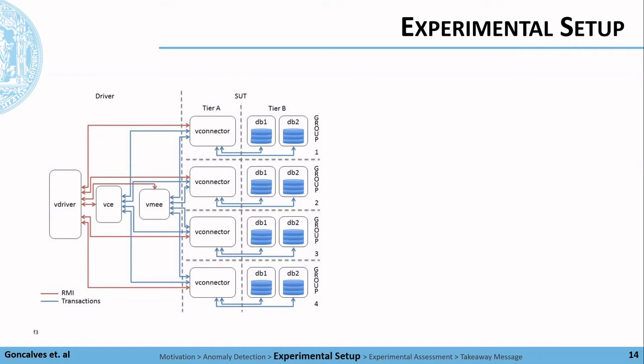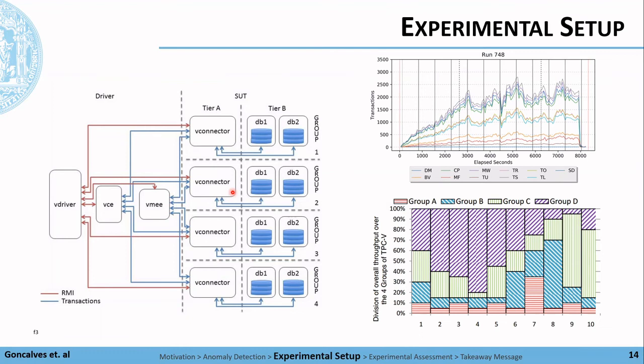To validate our methodology and approach, we run an experimental campaign using the TPC Express Benchmark V, which is a publicly available end-to-end benchmark for data-centric workload on virtual services. As you can see in this figure that represents a conceptual architecture of the TPC-XV, the benchmark has many components that interact with the goal to measure the performance of the system. We deploy this architecture in a virtualized environment with 15 virtual machines that are managed by a ZEN hypervisor.